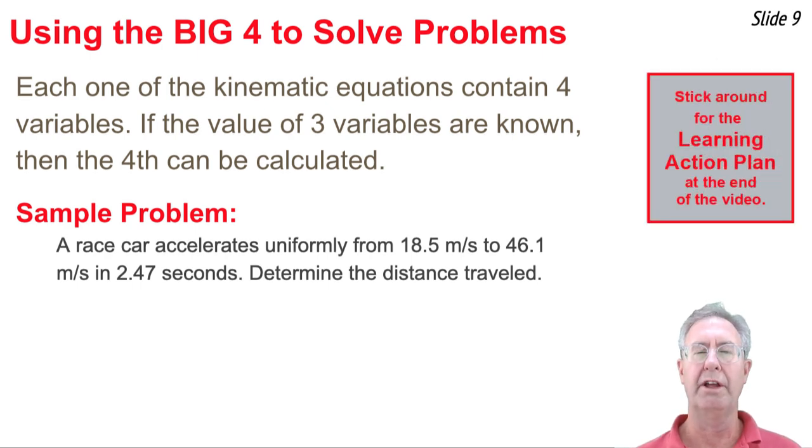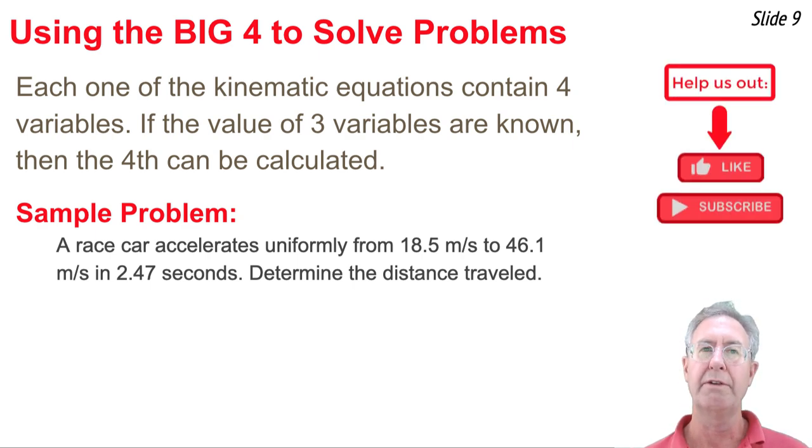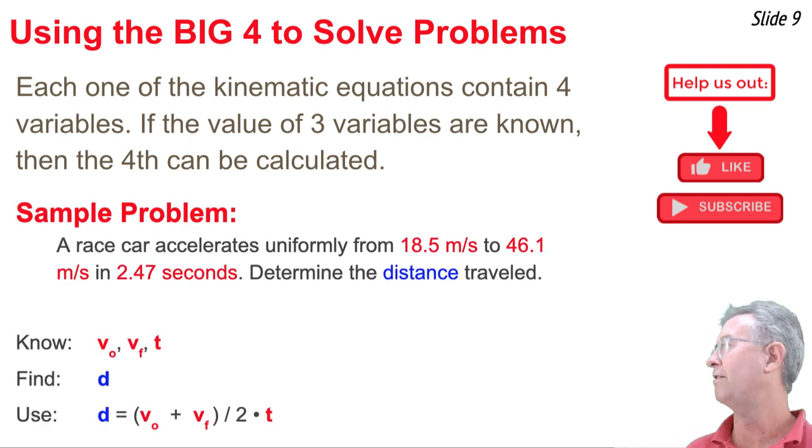And now we get to the useful part, learning how to use the kinematic equations to solve physics word problems. So what we've seen so far is that there are five variables in these equations, but not a single one of the equations contains five variable values in it. In fact, each equation has four variables in it, four symbols. So the strategy that we use to solve a problem is to look through a problem like the one that you see here and try to find three known values in order to solve for the fourth variable that the problem requests. For instance, here we see 18.5 meters per second, 46.1 meters per second, and 2.47 seconds.